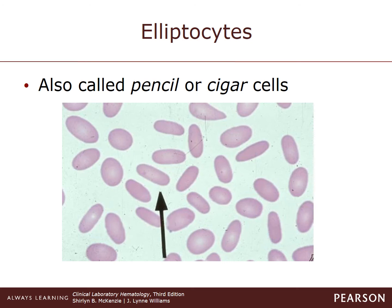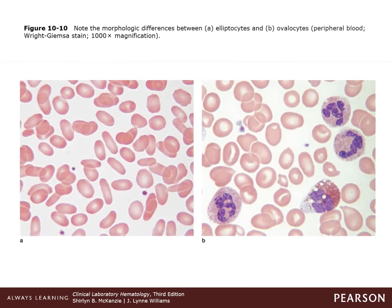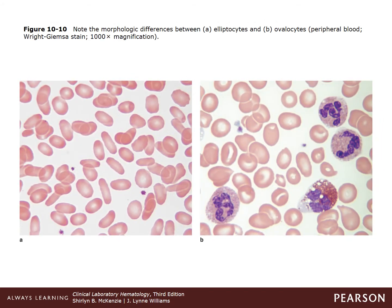Elliptocytes, or pencil or cigar cells, vary from elongated oval shapes, called ovalocytes, to rod-like cells. Some labs use the terms elliptocytes and ovalocytes interchangeably, while others may use them to distinctively delineate the two different morphologies. True elliptocytes have parallel sides with a central area of biconcavity with hemoglobin concentrated at both ends. They form after the erythrocyte matures and leaves the bone marrow and can be seen in hereditary conditions. Figure 10-10 shows the differences between an elliptocyte on the left and ovalocytes on the right — ovalocytes are more oval in shape and usually larger in size.